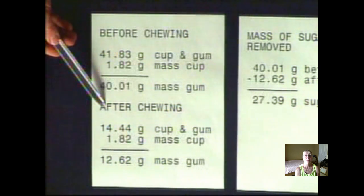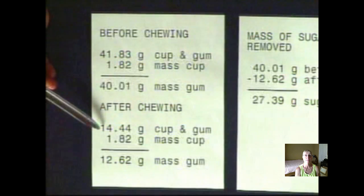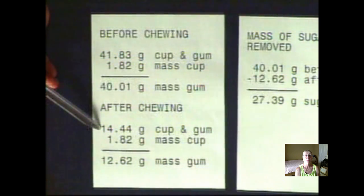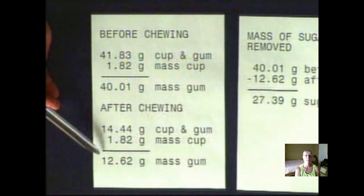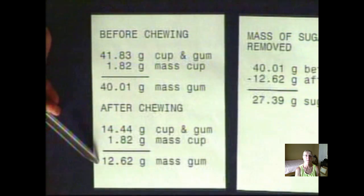We then chewed the gum for five minutes and after chewing we massed it in the cup. Subtracting the mass of the cup, we had 12.62 grams of gum without the sugar.